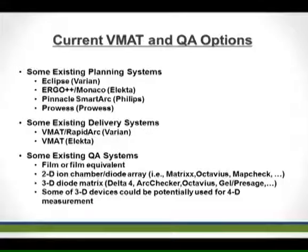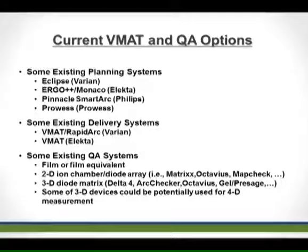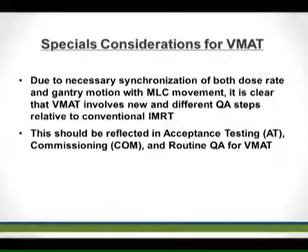Current VMAT planning options include Eclipse, Monaco, Electa, SmartArc from Pinnacle, and Prowess. Delivery solutions include RapidArc and VMAT from Varian and Electa. QA systems include conventional film, 2D ion chamber arrays, diode arrays from different vendors, 3D diode matrices, and various vendor solutions. Researchers are also working on 3D gel dosimetry and 4D dosimetry.